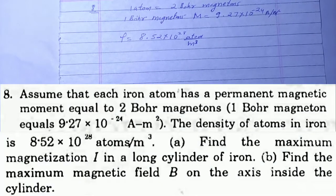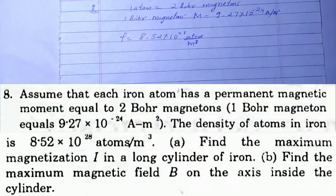Bummer Solution Chapter 37 Magnetic Property of Matter, Question number 8. Assume that each iron atom has permanent magnetic moment equal to 2 Bohr magnetons. 1 Bohr magneton equals 9.27×10^-24 A·m^2. The density of atoms in iron is 8.52×10^28 atoms/m^3. First, find the maximum magnetization I in a long cylinder of iron. Second, find the maximum magnetic field B on the axis inside the cylinder.